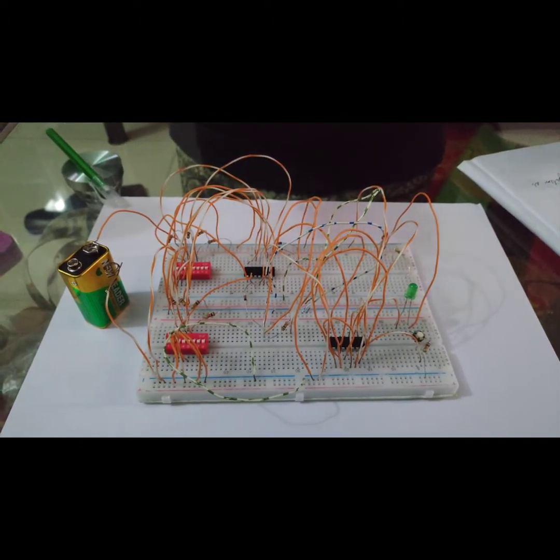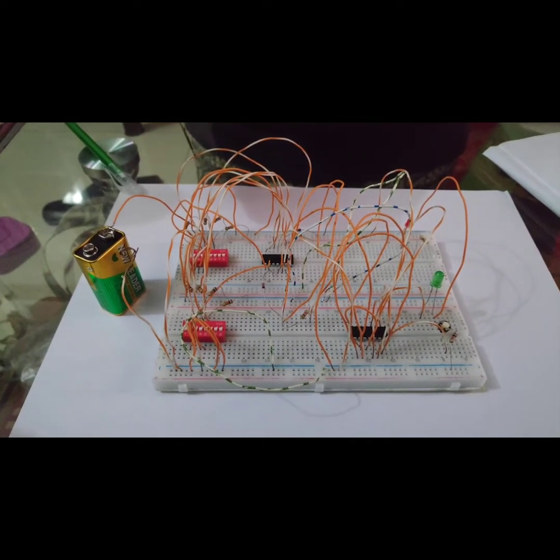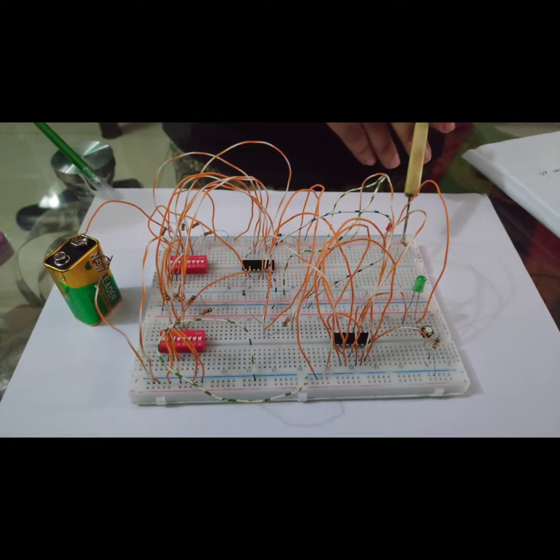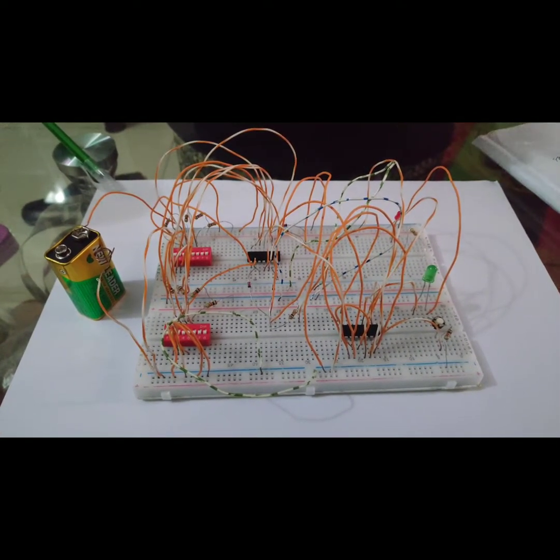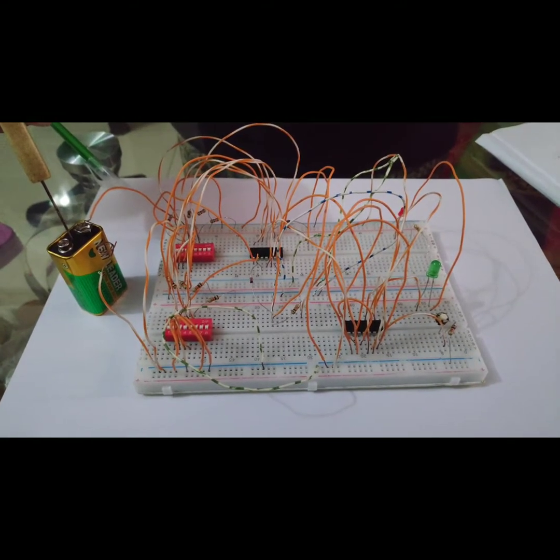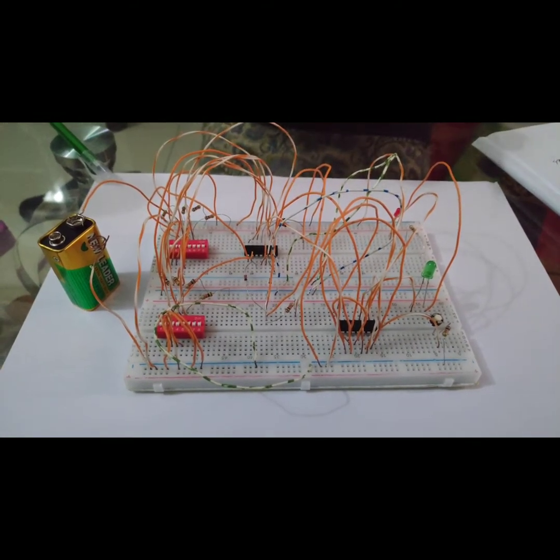10 kilo ohm resistors, we take 10 pieces of them. 470 ohm resistors, we take two pieces of them. One 9 volt battery and two breadboards. Now the prime component of this system is the switches.